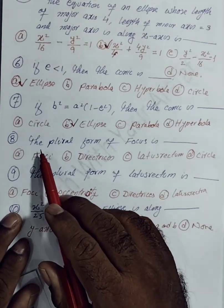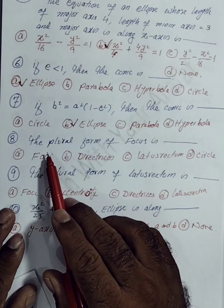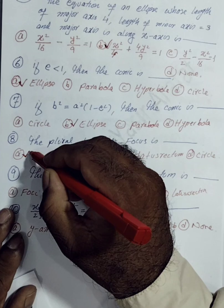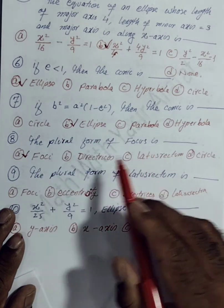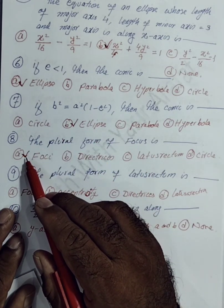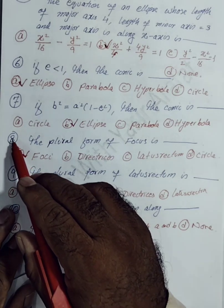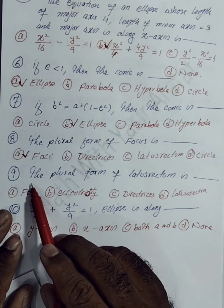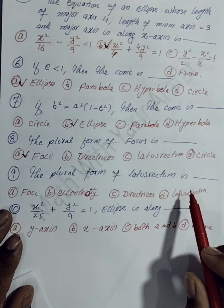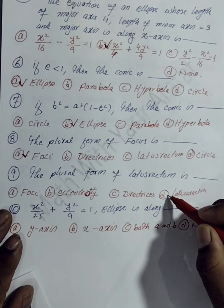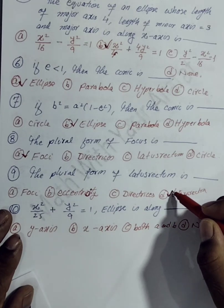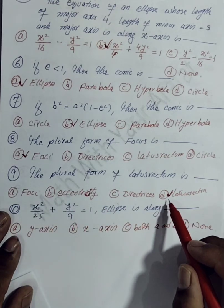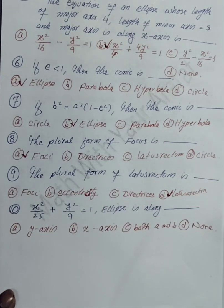The eighth MCQ: the plural form of focus is foci. So option A is correct. For the ninth MCQ, the plural form of latus rectum is latera recta. So option D is correct for the ninth MCQ.